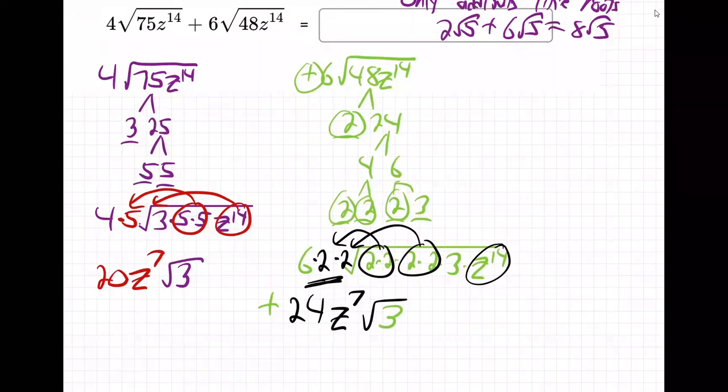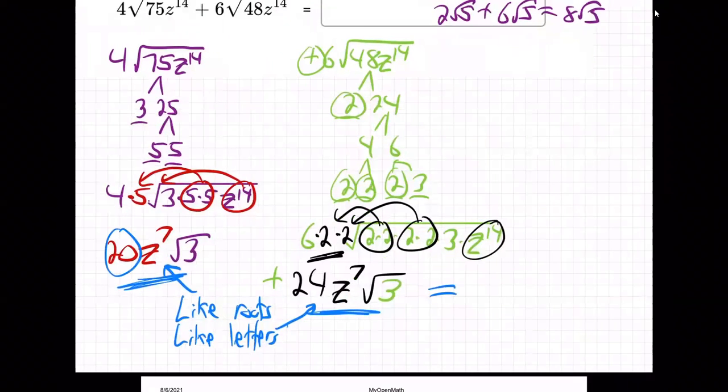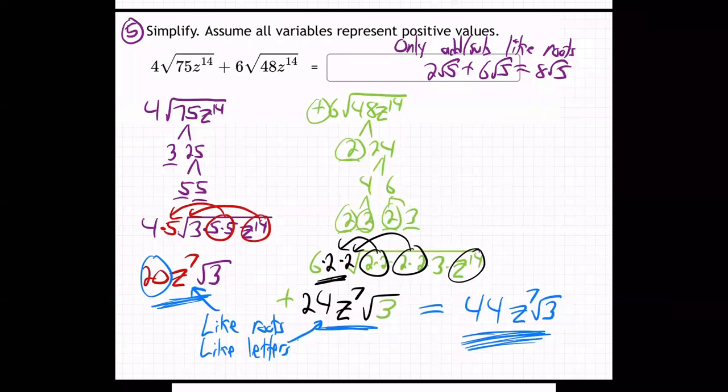So now we're ready to finish up this problem. Now this and this are like roots, aren't they? And they're also like letters. Everything is likable about them. So they're going to combine together. This is 20 z to the 7th root 3 things. And this is 24 z to the 7th root 3 things. So they're both z to the 7th root 3 things. 20 of them and 24 of them adds up to be 44 of them. There's the answer. So I did 20 and 24 makes 44 of the z to the 7th root 3 things. We added the like terms after simplifying.